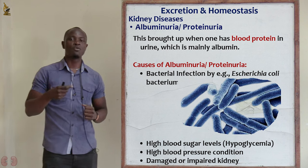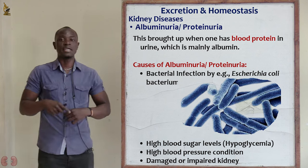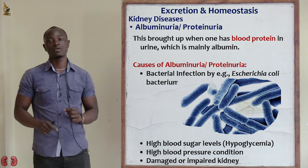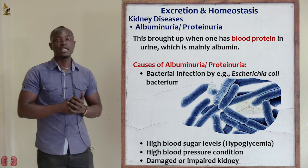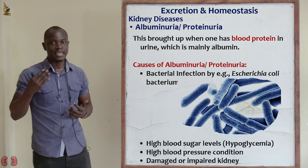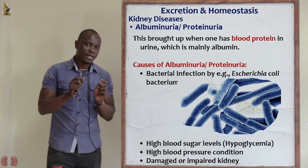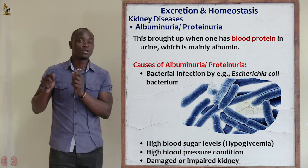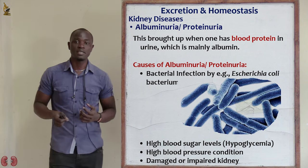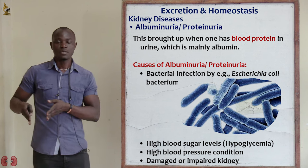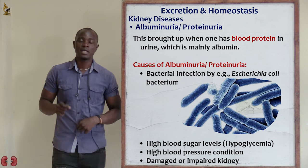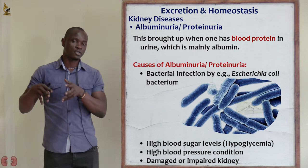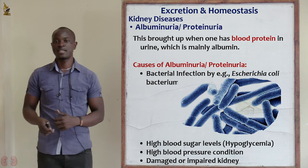So what are the causes of albuminuria or proteinuria? The first cause is bacterial infection — if this person is affected with bacteria, it will cause this disorder. Apart from that, we have high blood sugar level, referred to as hyperglycemia, which can also cause albuminuria. The next cause is people suffering from high blood pressure or hypertension — they have a very high chance of developing albuminuria.